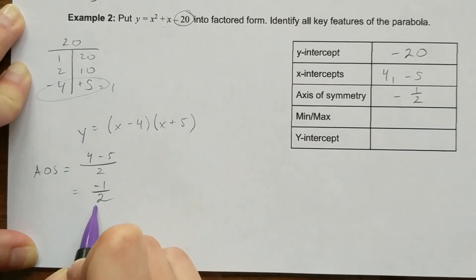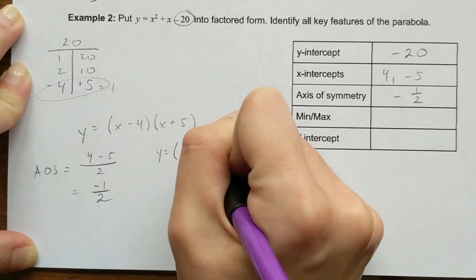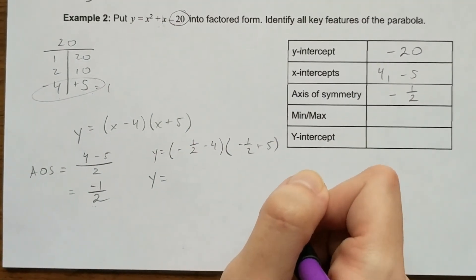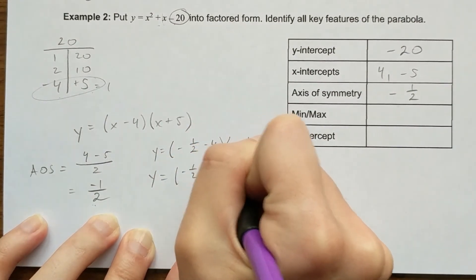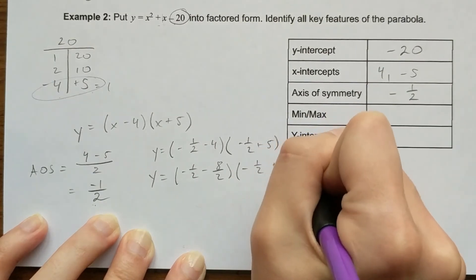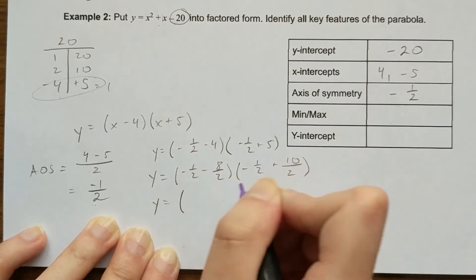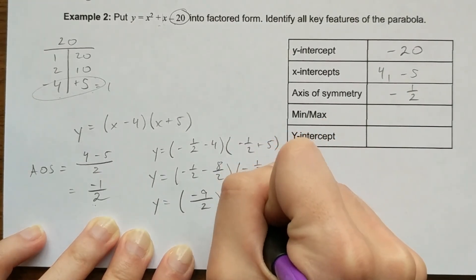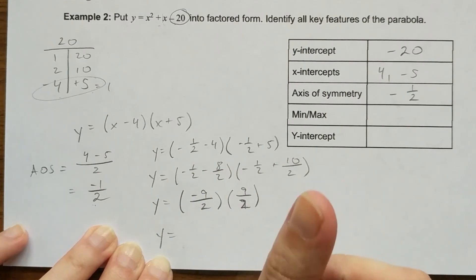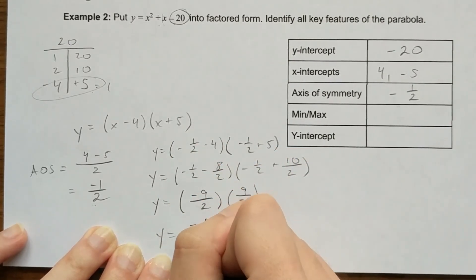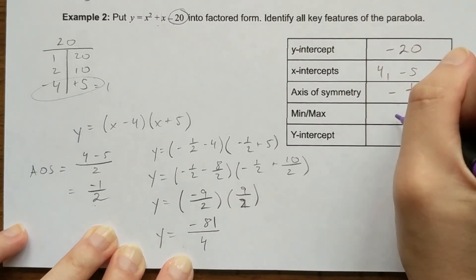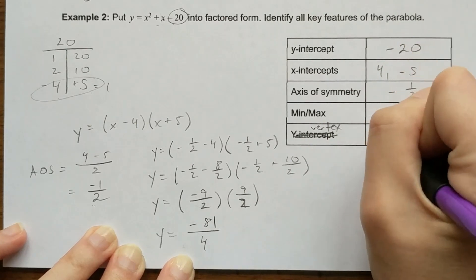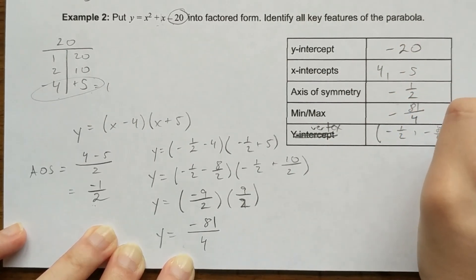To find the min or max, I plug x = -1/2 into my equation: (-1/2 - 4)(-1/2 + 5). That gives me (-1/2 - 8/2)(−1/2 + 10/2), which is (-9/2)(9/2). Multiplying top times top gives -81 and bottom times bottom gives 4, so my min or max is -81/4. My vertex is therefore at (-1/2, -81/4).